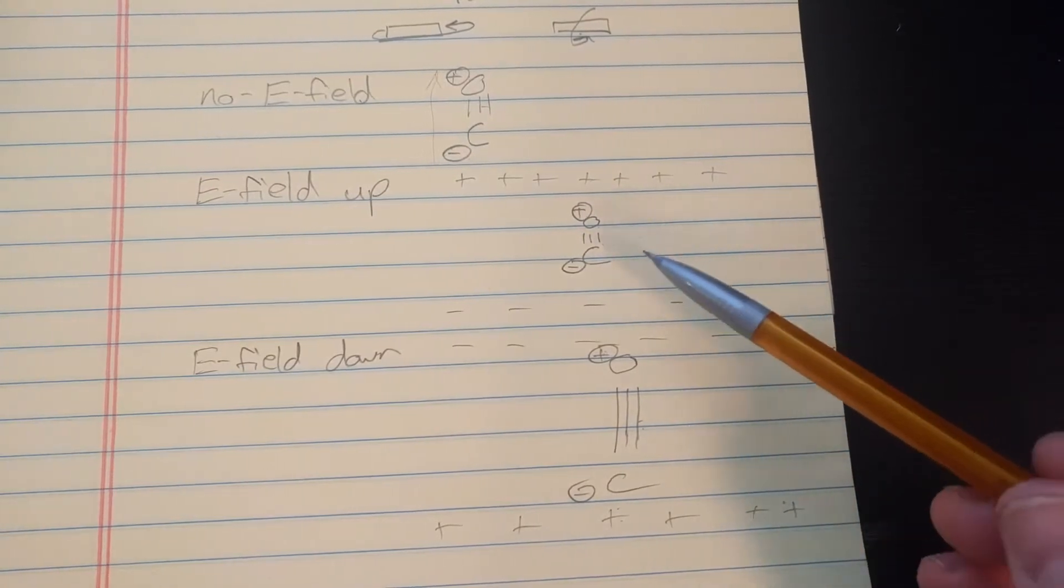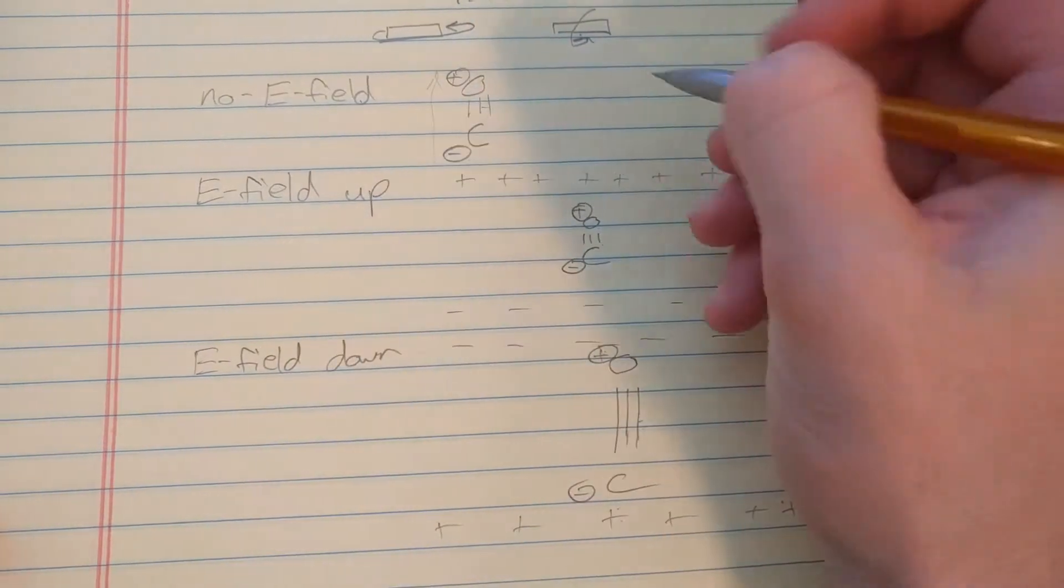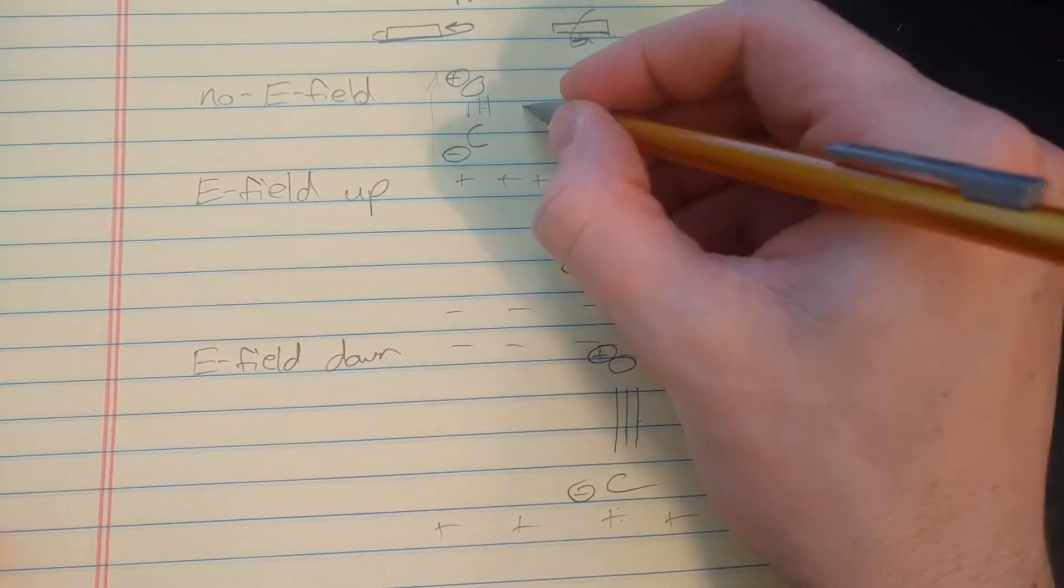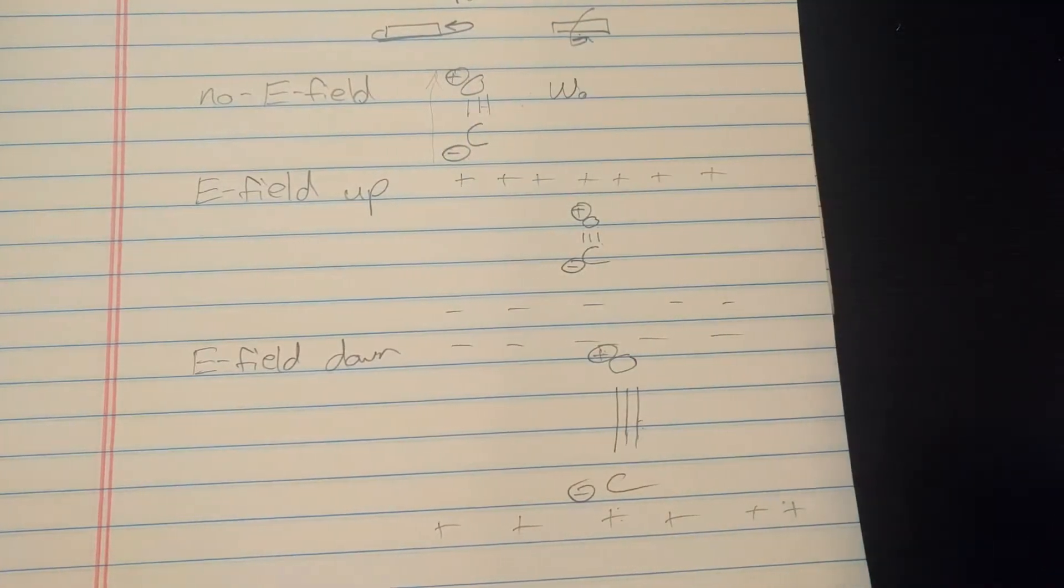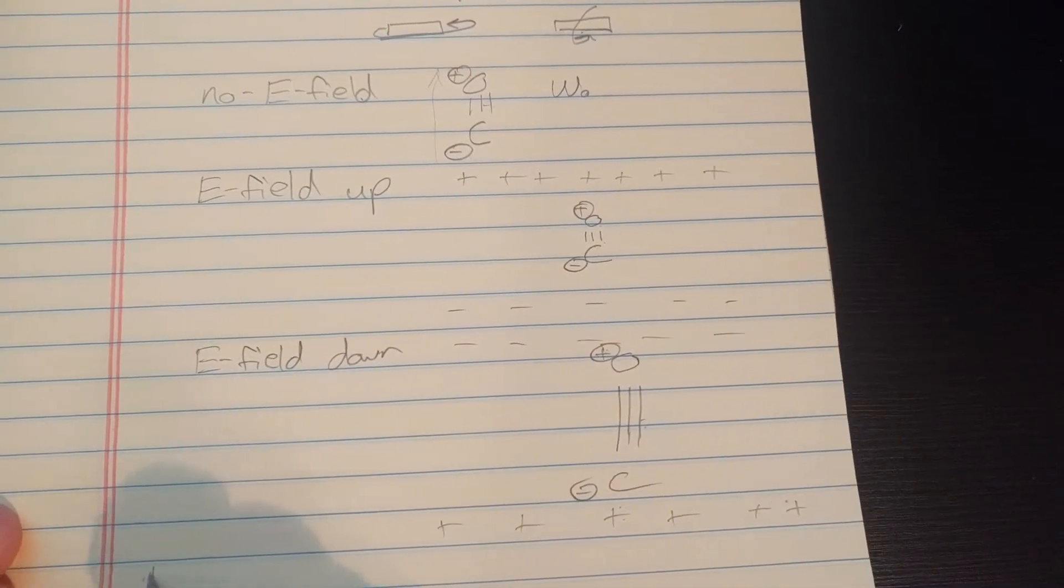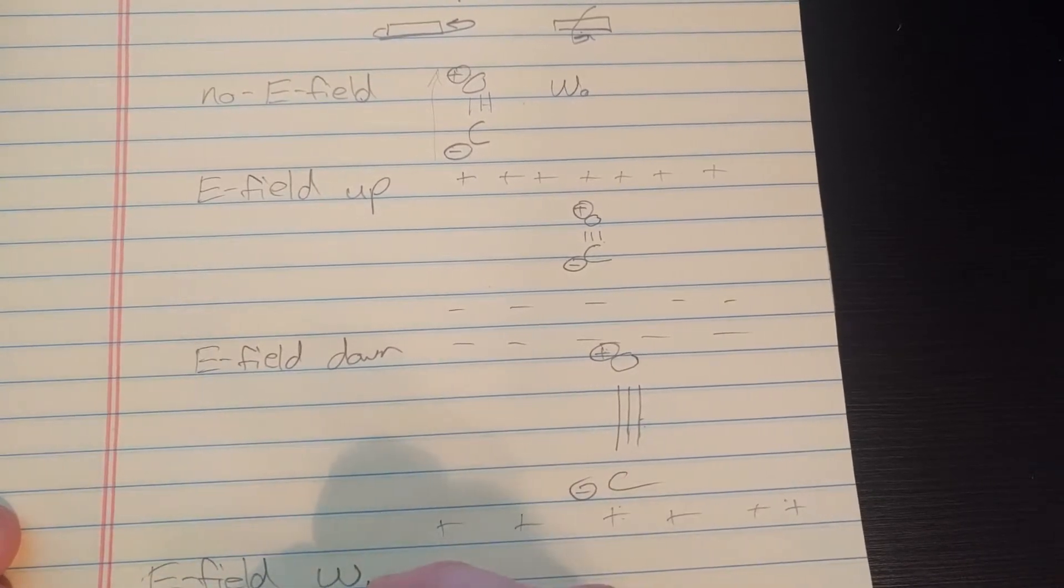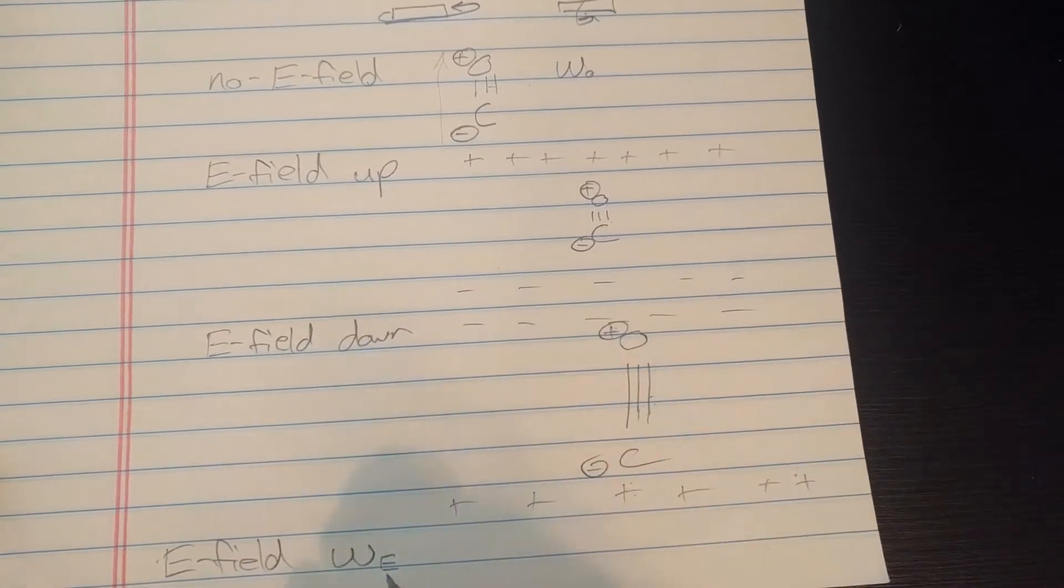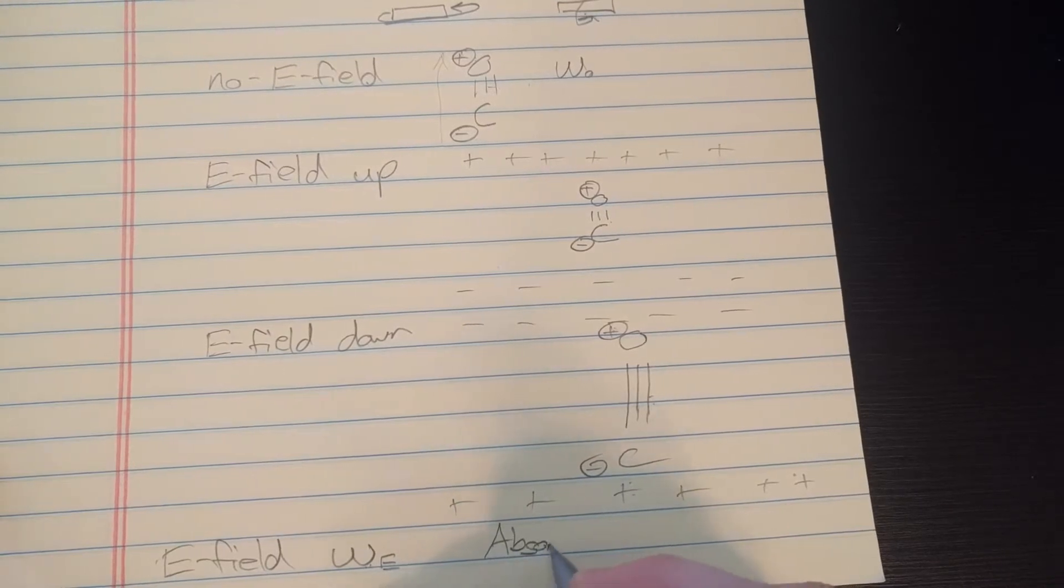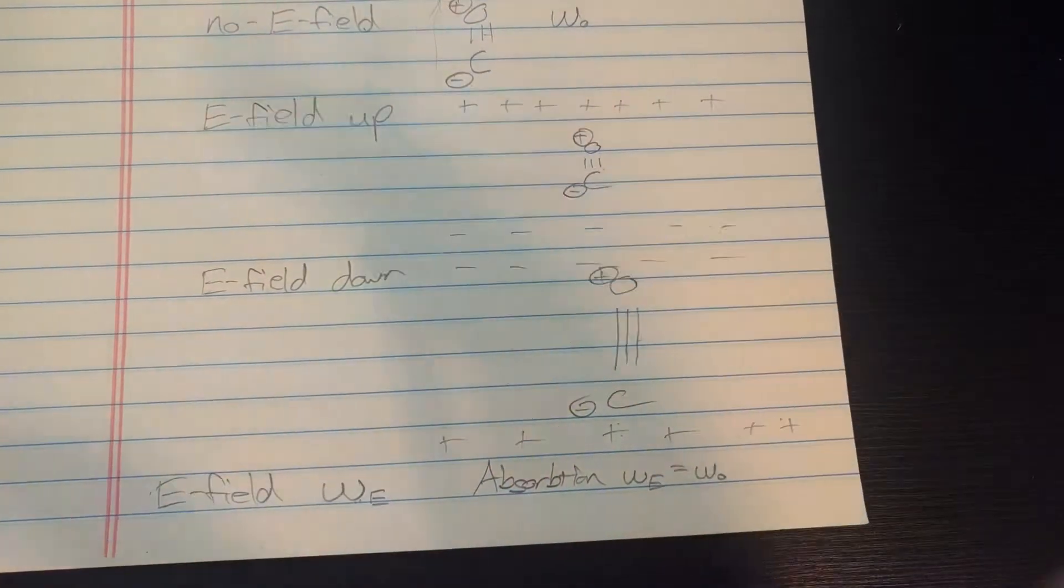And even without an electric field, the bond is vibrating at its natural frequency. So, here, it has a natural frequency. We'll call it omega naught. And if the E field, we'll say the E field has a frequency omega E. Now, absorption occurs. We get absorption of the electromagnetic radiation when omega E equals omega naught. It's sort of like a resonance effect.